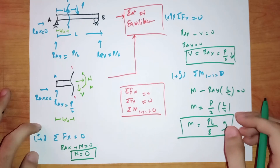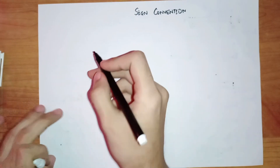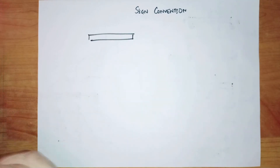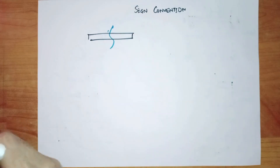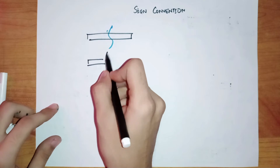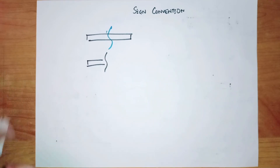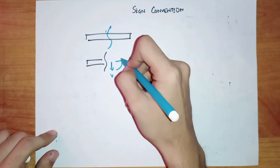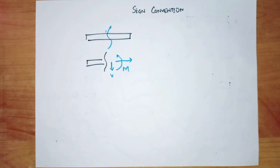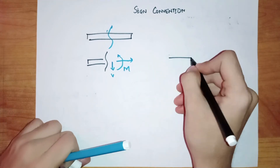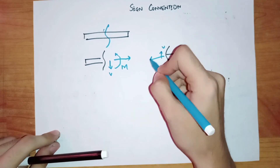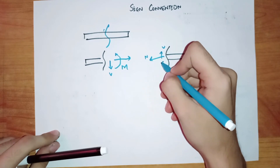This is how we find internal forces in a beam. Now let's talk about the sign convention. The way I do it is really simple. Whenever I cut a section through a beam, if I take the left segment, I would take the shear force in the downward direction, normal force to the right, and the moment as anticlockwise. And if I'm taking the right segment, I would take the shear force in the upward direction, normal force to the left, and the moment as clockwise.